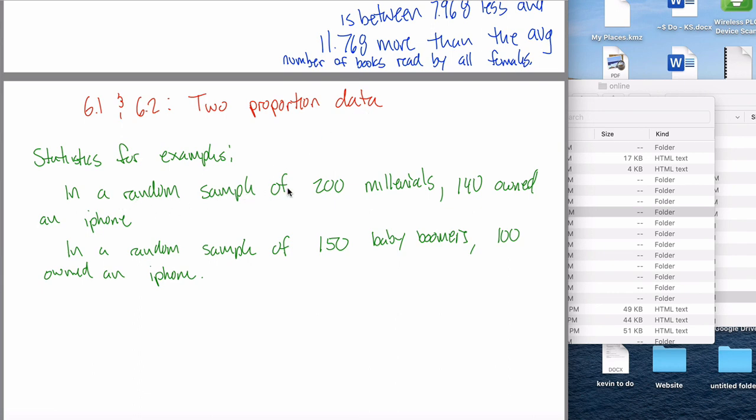So for example, maybe I have a random sample of 200 millennials and some number of them, 140 in this case, do something - own an iPhone in this example. And then a random sample of 150 of some other group, baby boomers, and 100 of them own an iPhone.